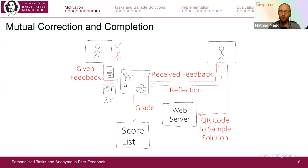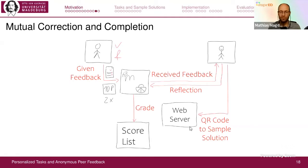Students do the review, give feedback, score the solutions, and upload the results back to Moodle. Then students can see the received feedback and also write a reflection, which is very interesting for me to read — what they learned from the task and so on. Students can later access their own sample solution, and their score is saved into a score list. We don't use this for the final grade, but they need to get a certain score over the whole semester to be able to register for the exam.